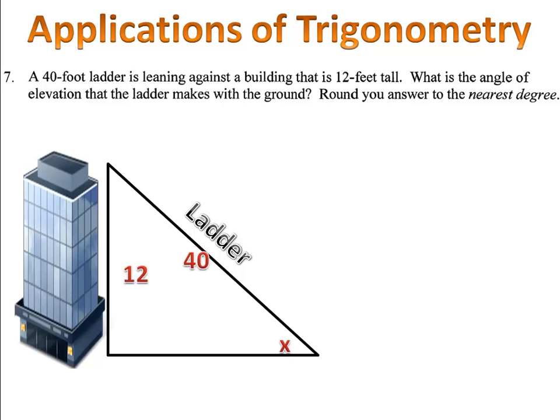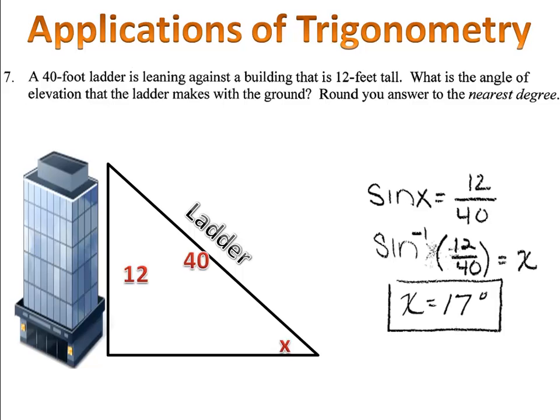Now let's find the measure of the angle. Please pause the video here, find the measure of angle x and then come on back. Let's see how you did. We have the opposite and the hypotenuse. Opposite and hypotenuse is our sine ratio. So, the sine of angle x is 12 over 40. We use the inverse to find the measure of the angle. We get that the angle is approximately 17 degrees.